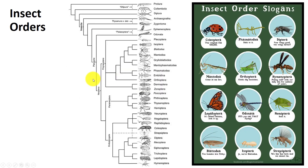There are 28 insect orders, but we won't be covering all of them. The insects are broken into phylogenetic groups, and it moves from more primitive to more advanced species. We are only going to go over the ones that you are likely to encounter.